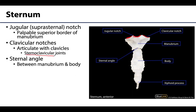Right where the manubrium meets the body is the sternal angle. If you found your jugular notch and continue moving inferiorly, you'll feel the sternum project slightly more anteriorly — that is the sternal angle. It marks approximately the level where the second rib articulates with the sternum, which helps in counting ribs and assessing injury levels. Both the jugular notch and sternal angle also help guide where a physician places a stethoscope to hear specific sounds.